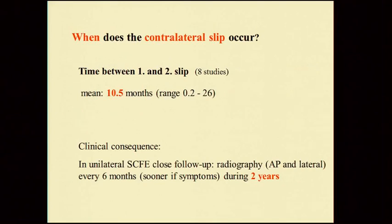When does the contralateral slip occur? The time between first and second slip, from eight studies, varied between 0.2 and 26 months, with a mean of 10.5 months. The consequence is that in unilateral slipped epiphysis, close follow-up with radiographs — both AP and lateral — every six months should be done, or sooner if there are symptoms, during two years.